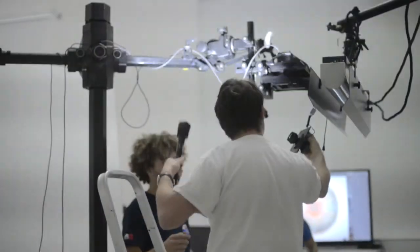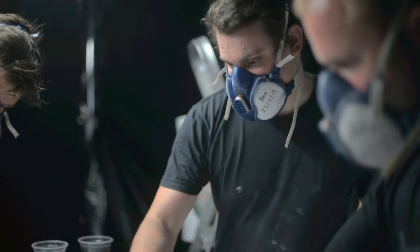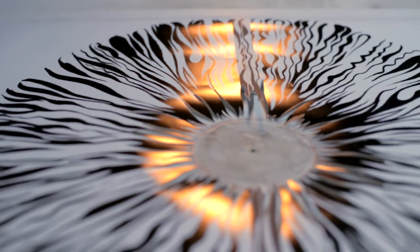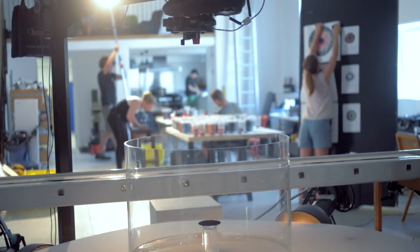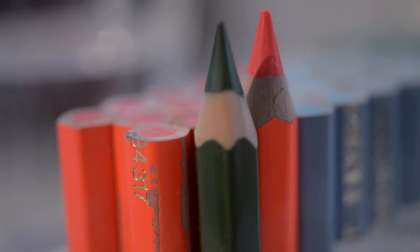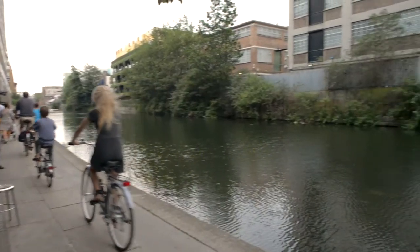I'm Dan Tobin-Smith, I'm a still life photographer based in London. I specialize in high production still life and a lot of stuff to do with perspectives, anamorphosis, also stuff with effects, whether it's liquids or powders or actions, pyro, explosives, stuff like that.